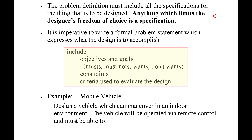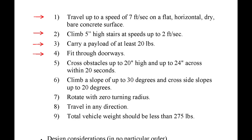The example problem statement in the notes details a remotely controlled mobile vehicle which must be able to operate in an indoor environment. The first goal is for it to travel up to a speed of 7 feet per second on a flat, horizontal, dry, bare concrete surface. As engineers, we like this first objective because it contains quantitative data — we can replicate the environment, the surface, and the friction coefficient, and we can measure the velocity using a calibrated instrument.